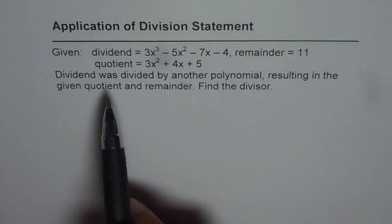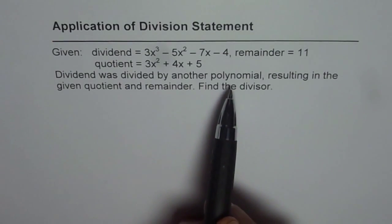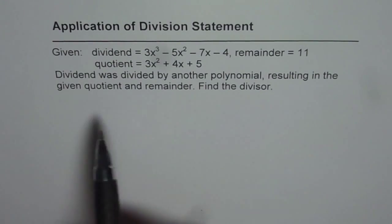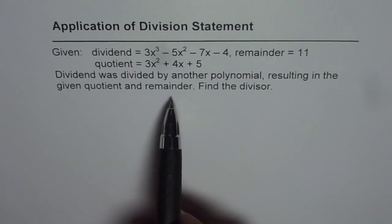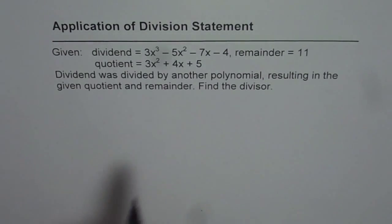Now dividend was divided by another polynomial resulting in the given quotient and remainder. Find the divisor. So the other polynomial is the divisor. You need to find the divisor. You can pause the video, try the question and then look into my solution.